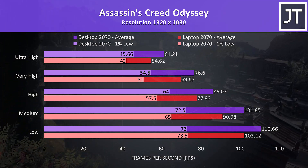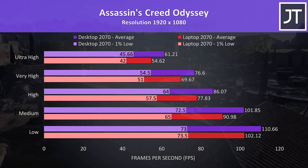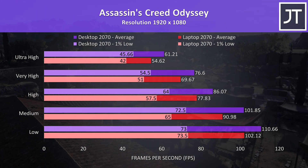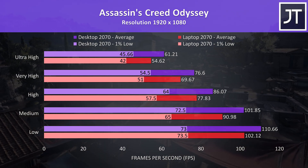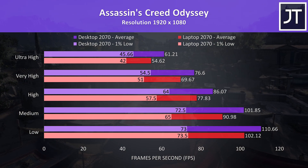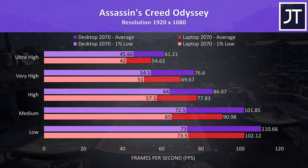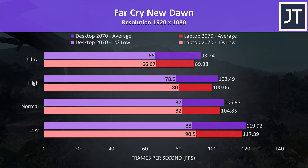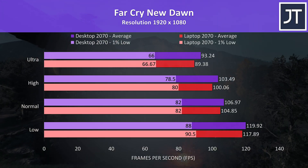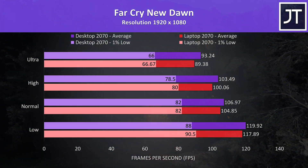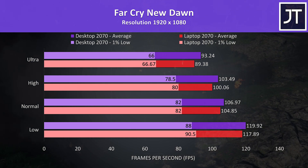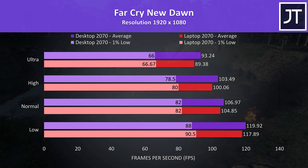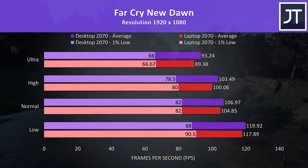Assassin's Creed Odyssey was tested using the game's benchmark, and the difference was one of the lowest out of all games tested, resulting in a 12% boost to average FPS at ultra high settings. Far Cry New Dawn was also tested with the game's benchmark tool, and this game saw the smallest difference out of all games tested, with just a 4% higher average frame rate at ultra settings.